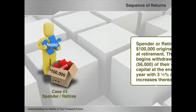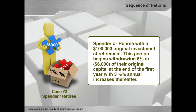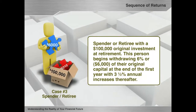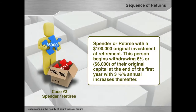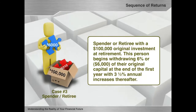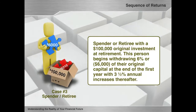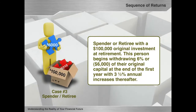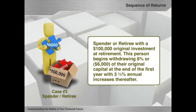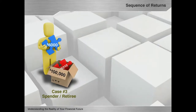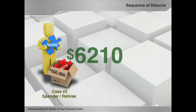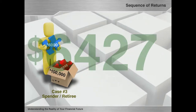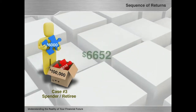Case 3 is a spender or retiree with a $100,000 original investment at retirement. This person begins withdrawing 6%, or $6,000, of their original capital at the end of the first year, with 3.5% annual increases thereafter. For example, the second year withdrawal would be 6.21%, and the third year 6.43%, etc.